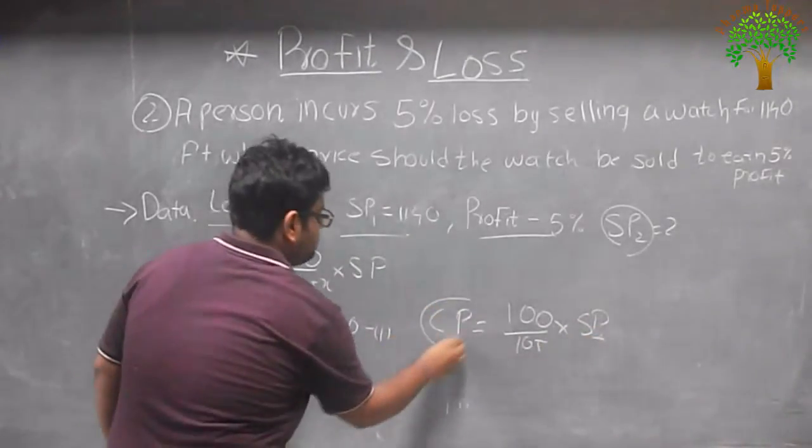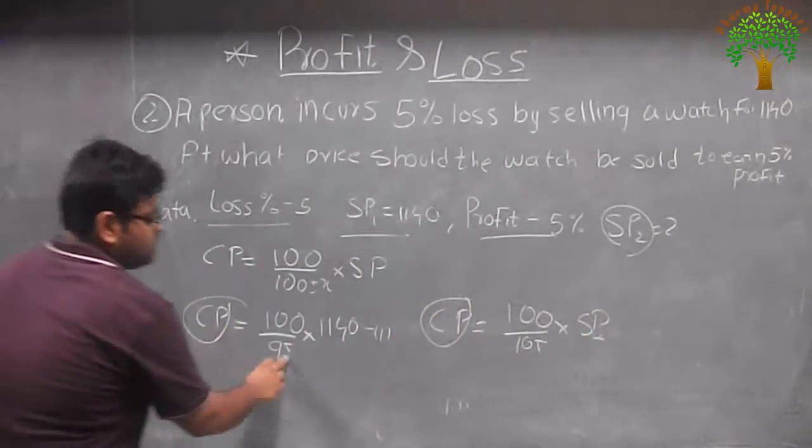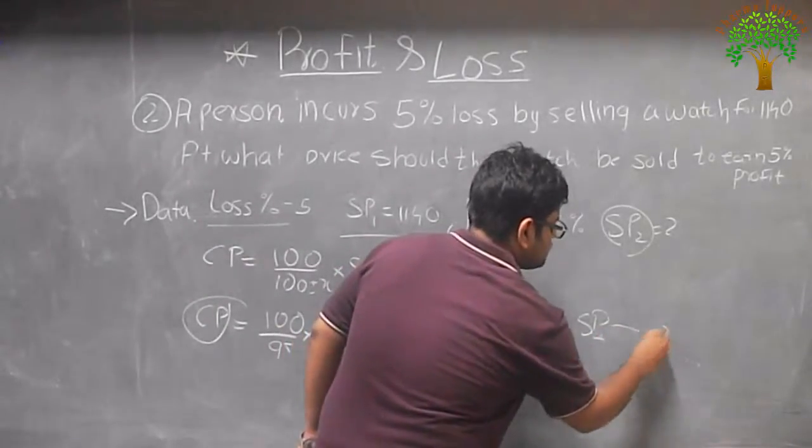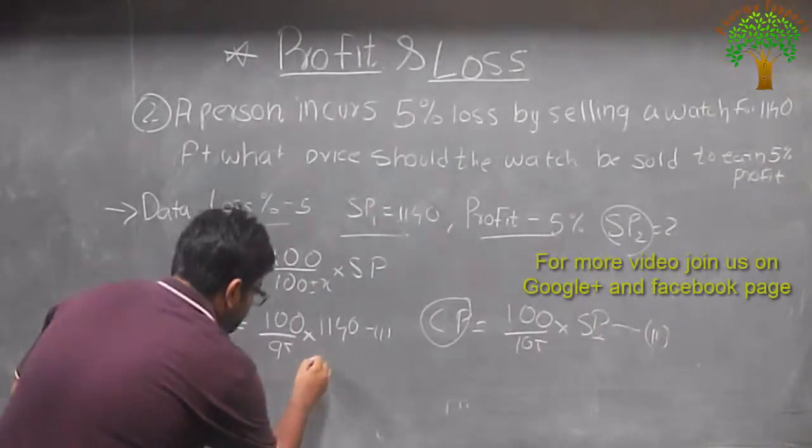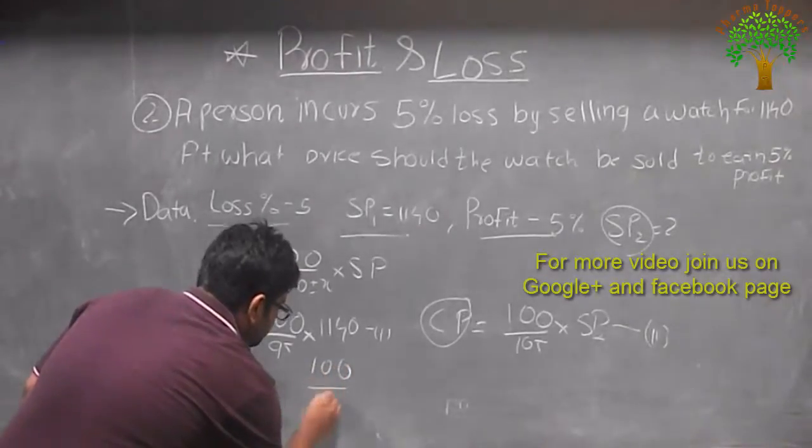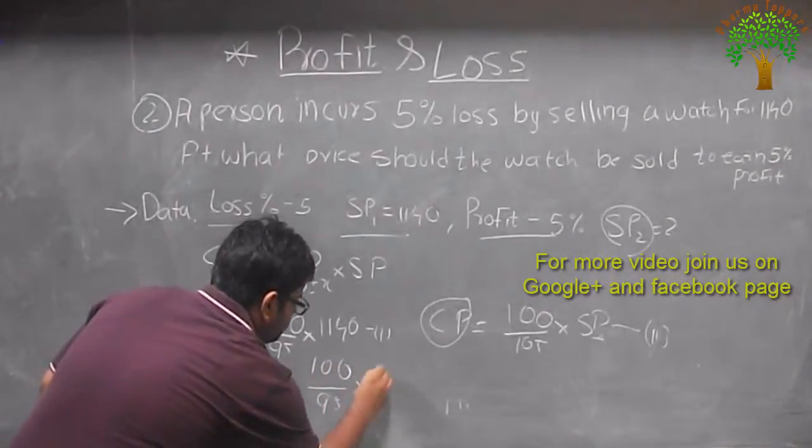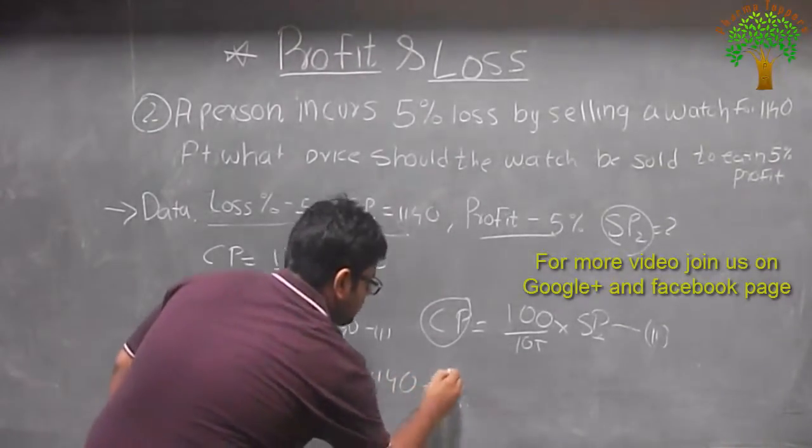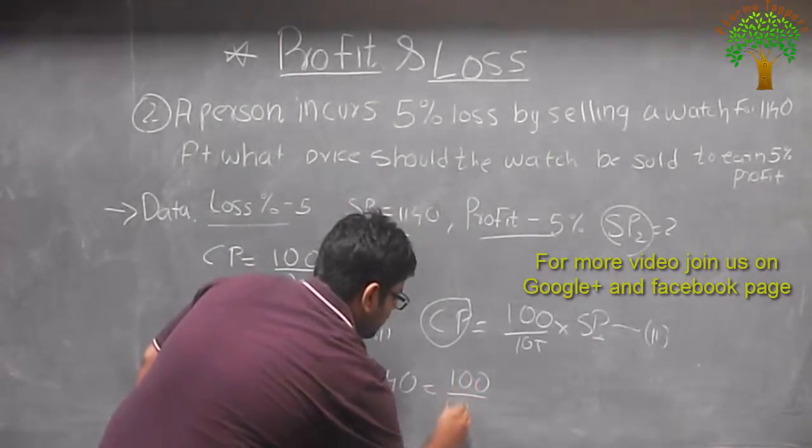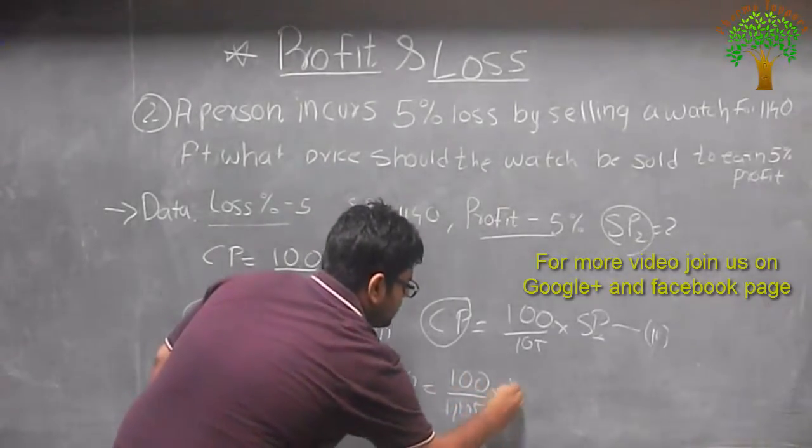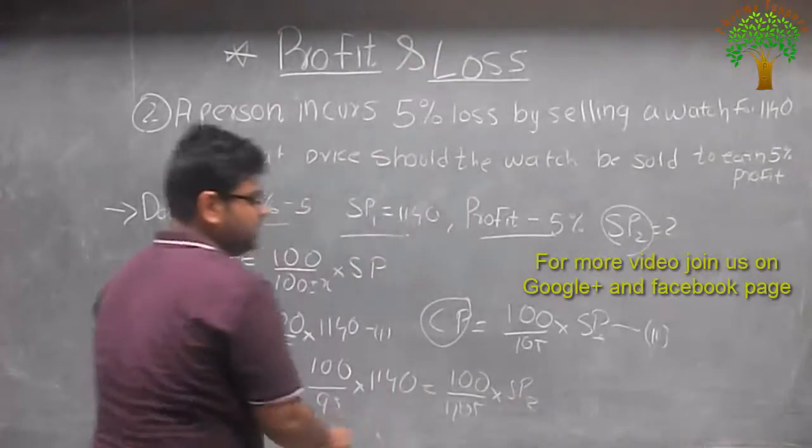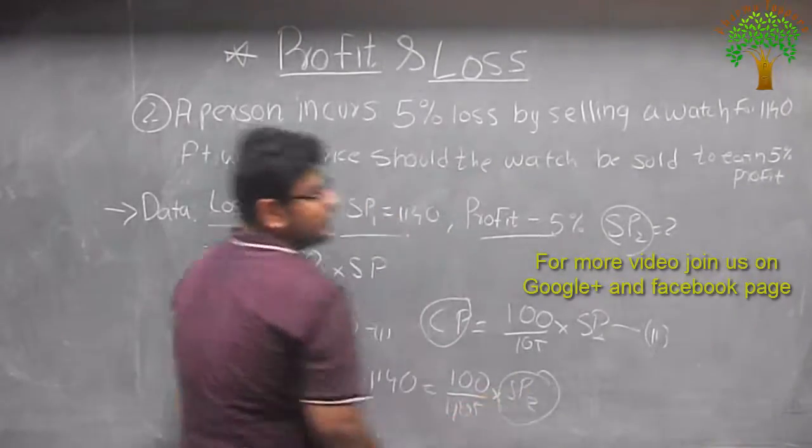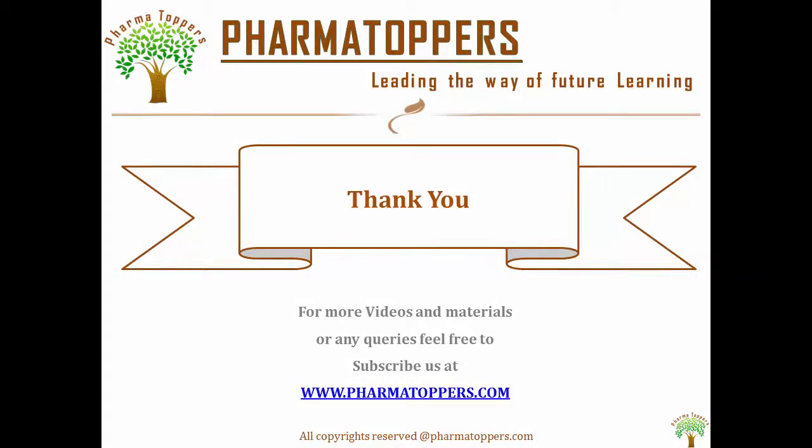So when we equate both of these selling price, the two equations like the equation 1 and the equation 2 can be equated together. Like it's 100 upon 95 into 1140 is equal to 100 upon 105 into SP2. So by calculating this we can get the new selling price.